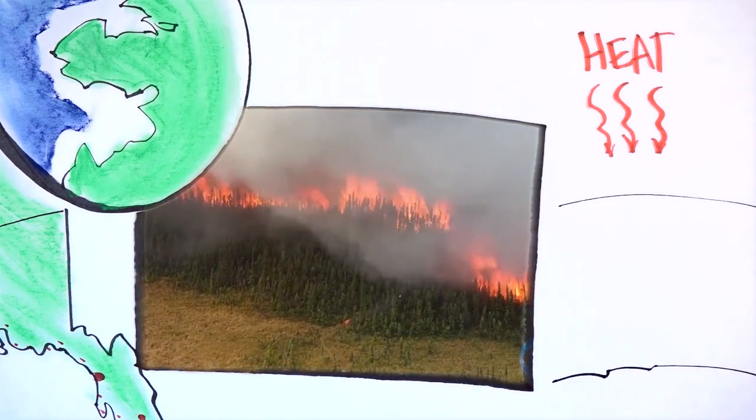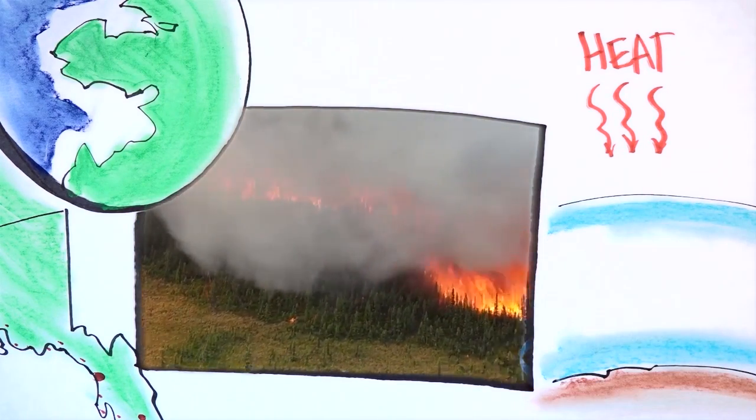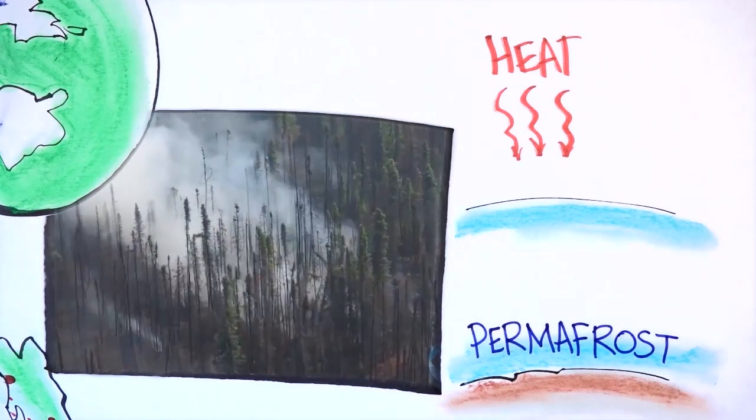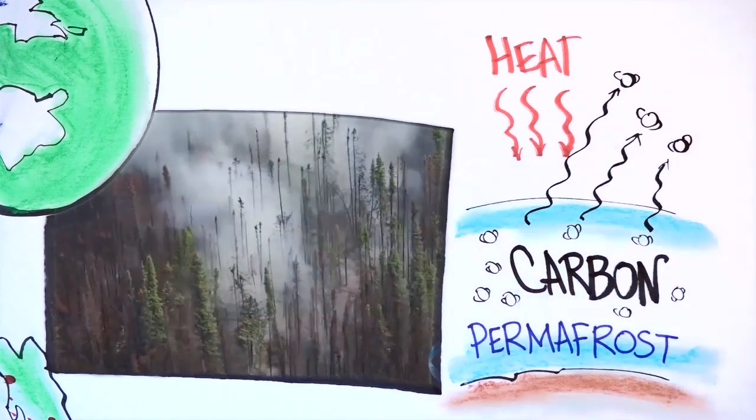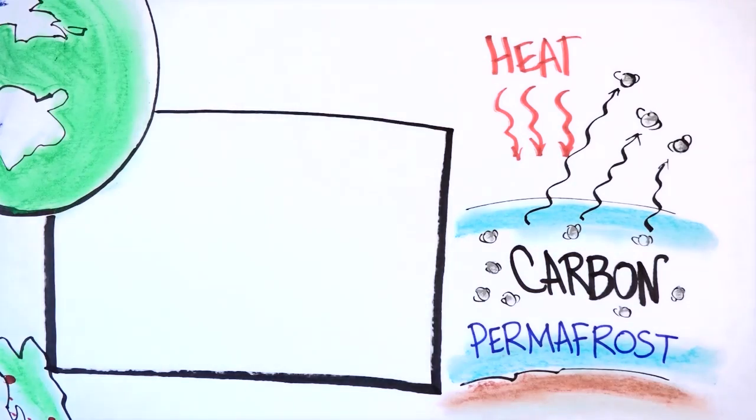Most troubling, more forest fires together with hotter temperatures are thawing ancient permafrost. Permafrost stores carbon and its demise could release vast quantities back into the atmosphere.